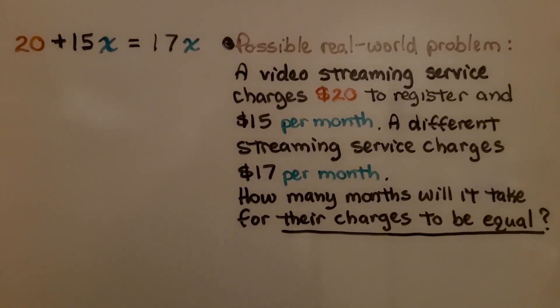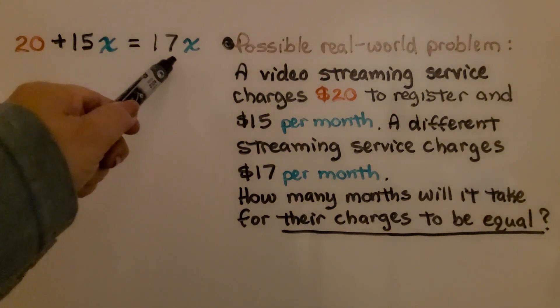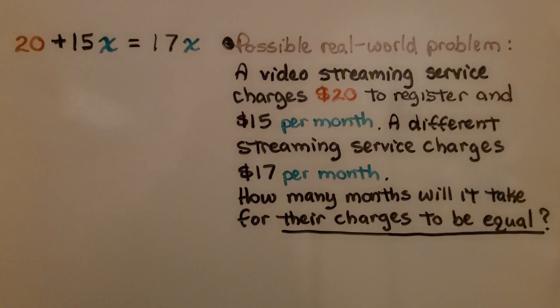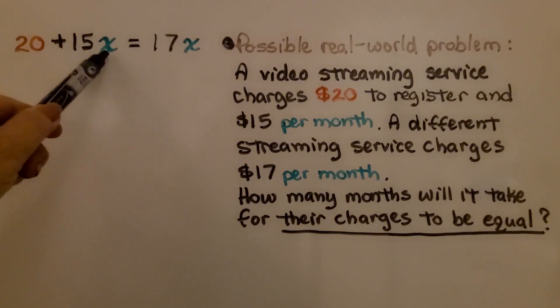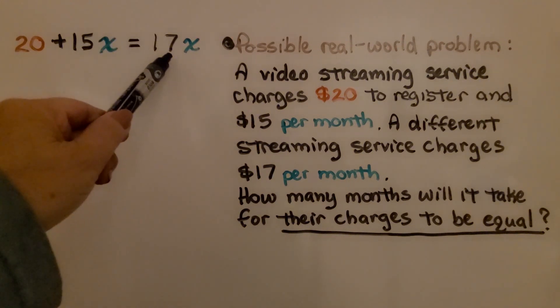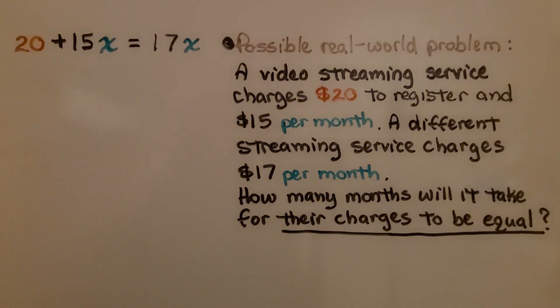Here we have another. It's 20 plus 15x is equal to 17x. The possible real-world problem that I came up with was a video streaming service charges $20 to register and $15 per month. A different streaming service charges $17 per month. How many months will it take for their charges to be equal?